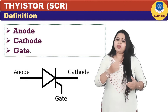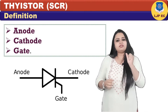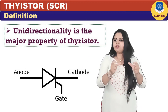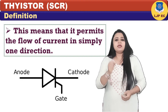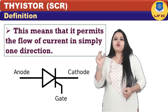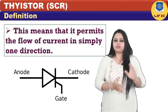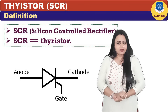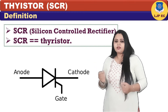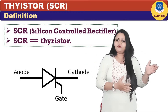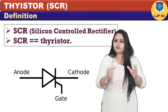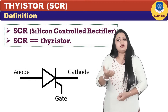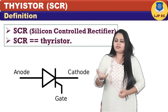For conduction to take place, a gate trigger pulse is necessary. Uni-directionality is a major property of thyristor, which means it permits flow of current in simply one direction. Though there exists a large classification of thyristor, SCR — silicon controlled rectifier — is considered to be the most crucial member of the thyristor family. Thus, SCR is generally referred to as thyristor.